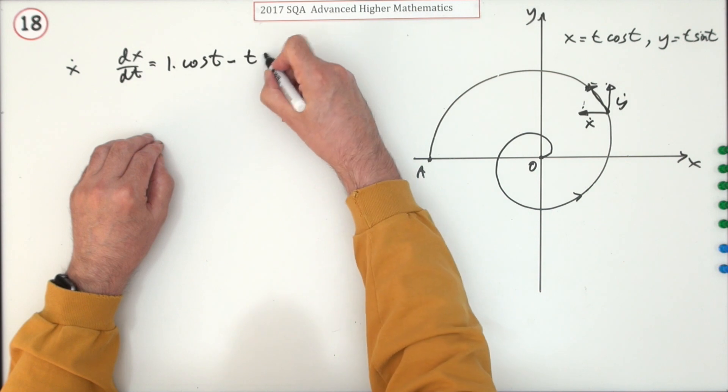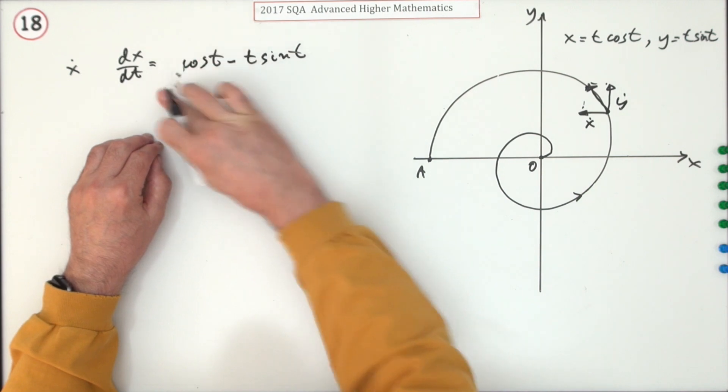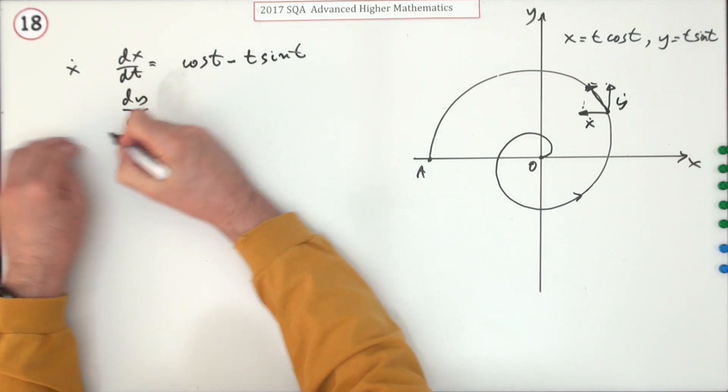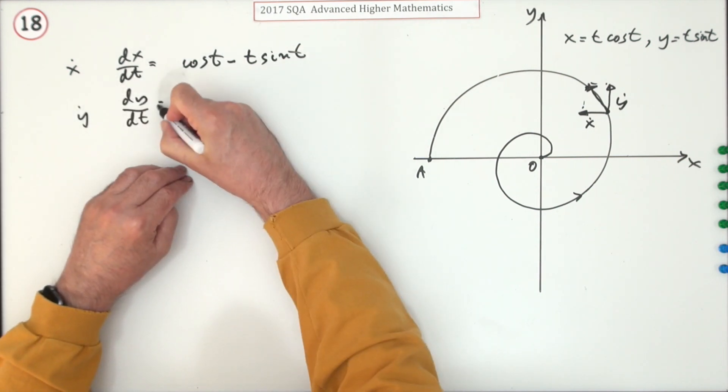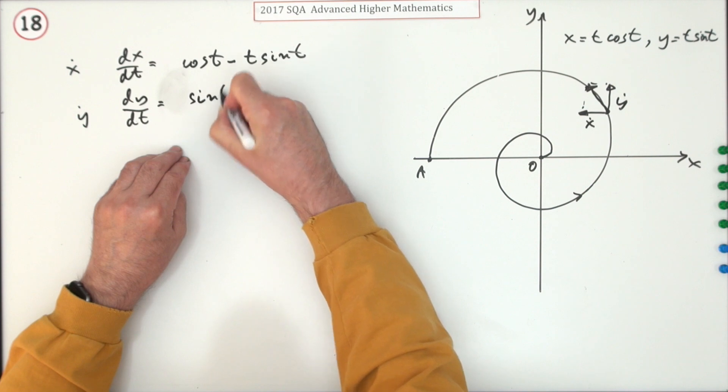We'll just take that out now because that's a bit messy. And similarly for dy/dt, or you could write y dot, that'll be 1 times sin t, which is just sin t, and t times differentiate sin—that goes to cos t.